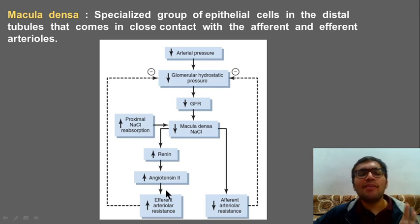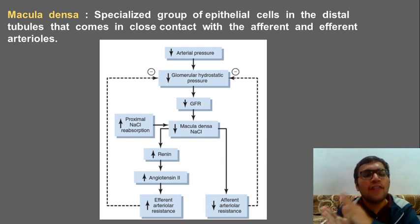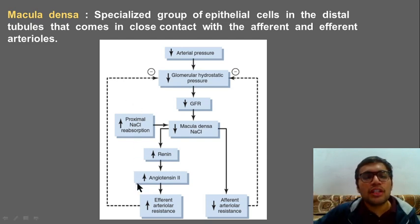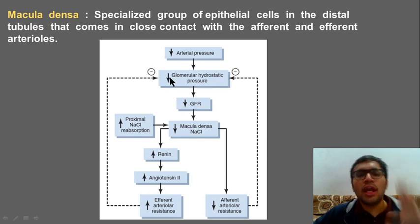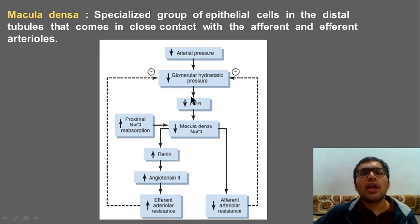Angiotensin 2 will constrict the efferent arteriole — its resistance increases and blood won't escape as freely, so GFR will increase. By this mechanism, GFR starts to increase and automatically the glomerular hydrostatic pressure that was falling receives a negative feedback correction — it increases. So even as arterial pressure is decreasing, there is a greater feedback to increase glomerular hydrostatic pressure.